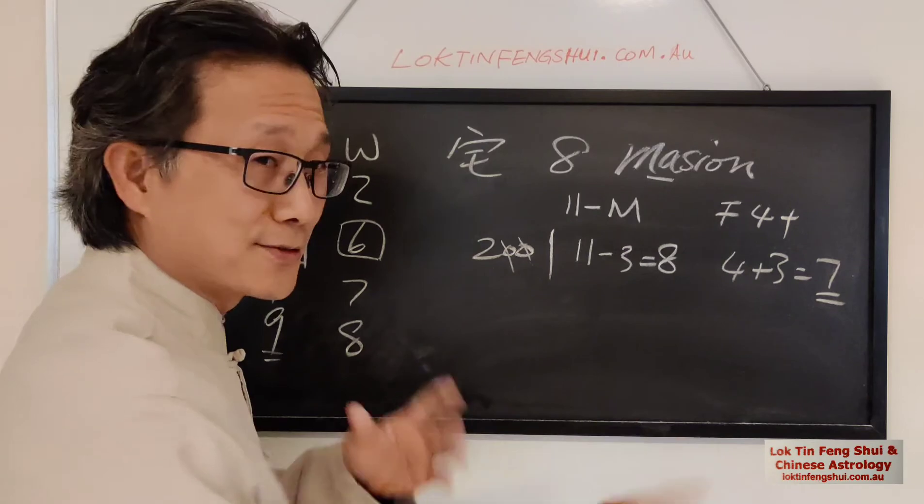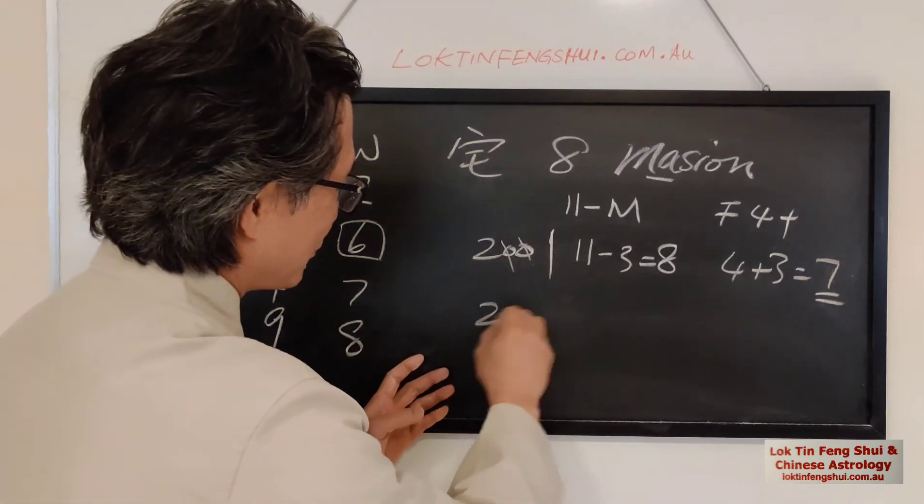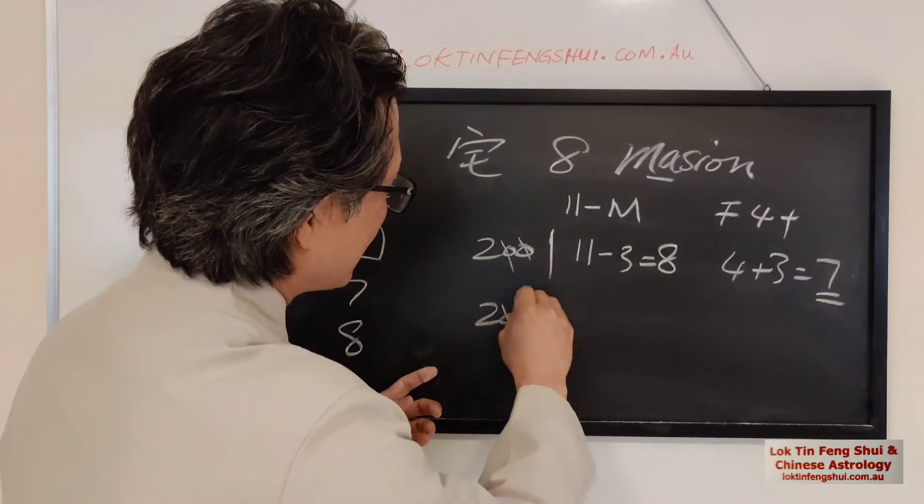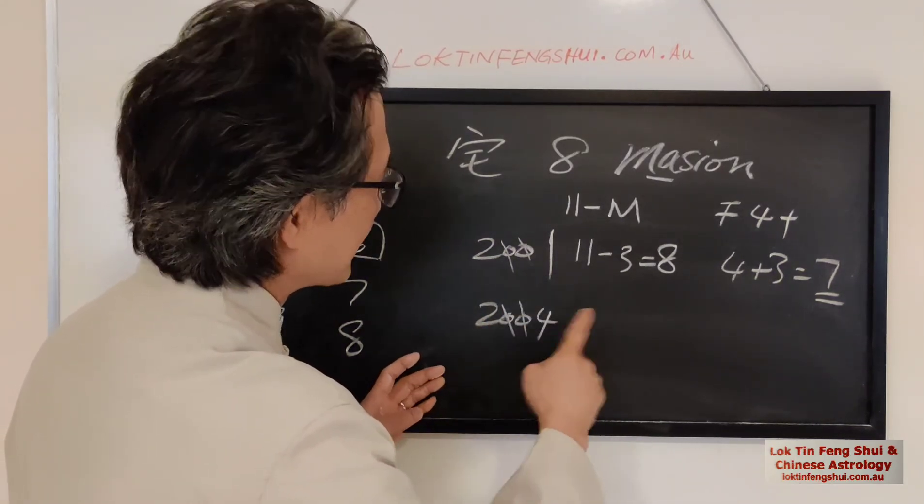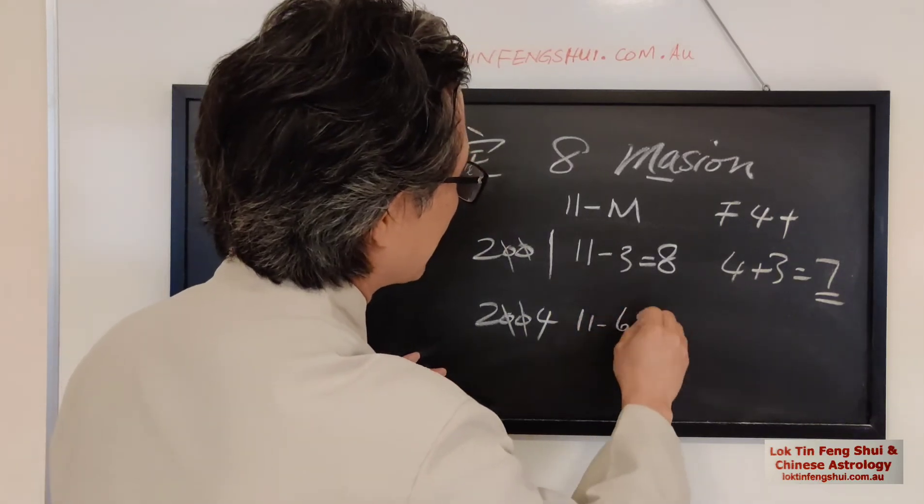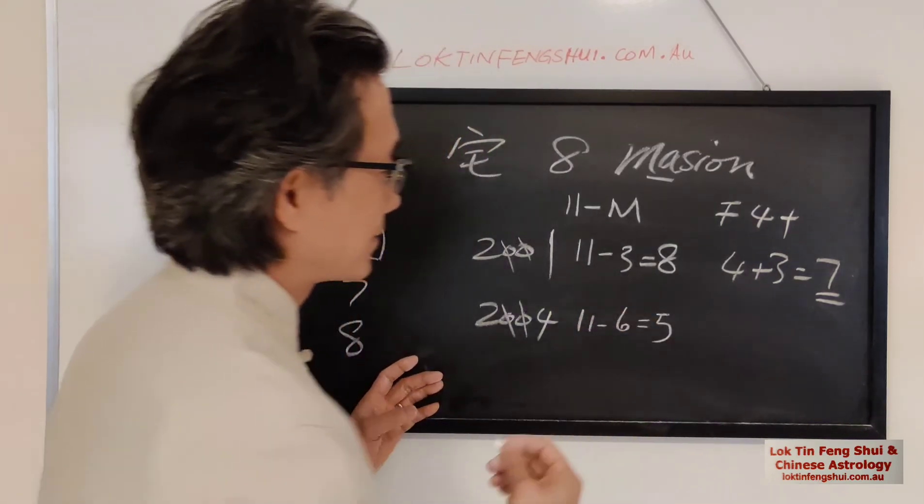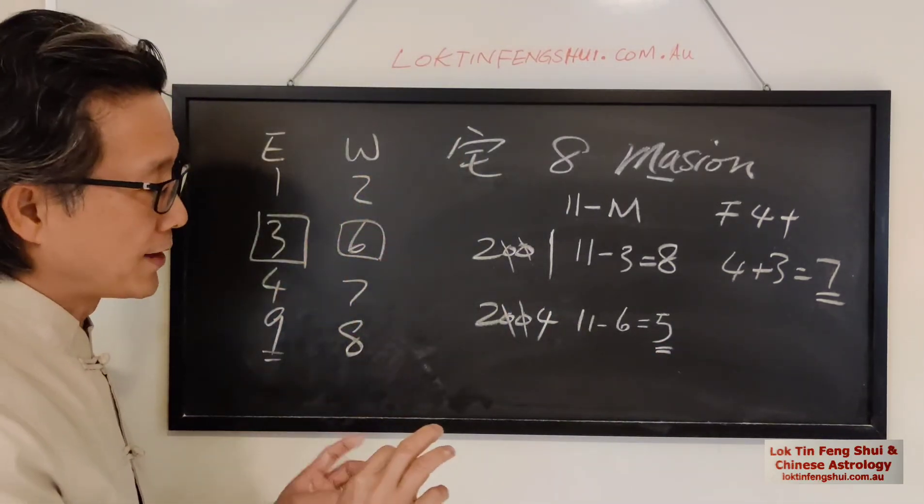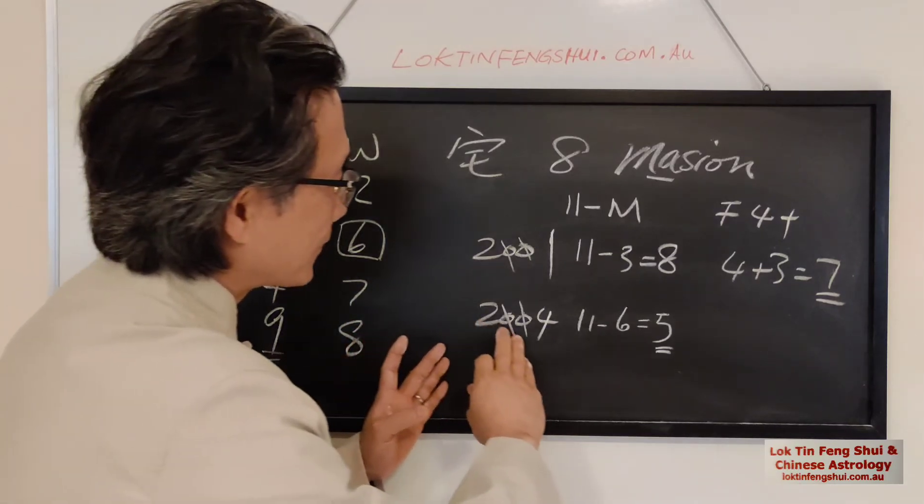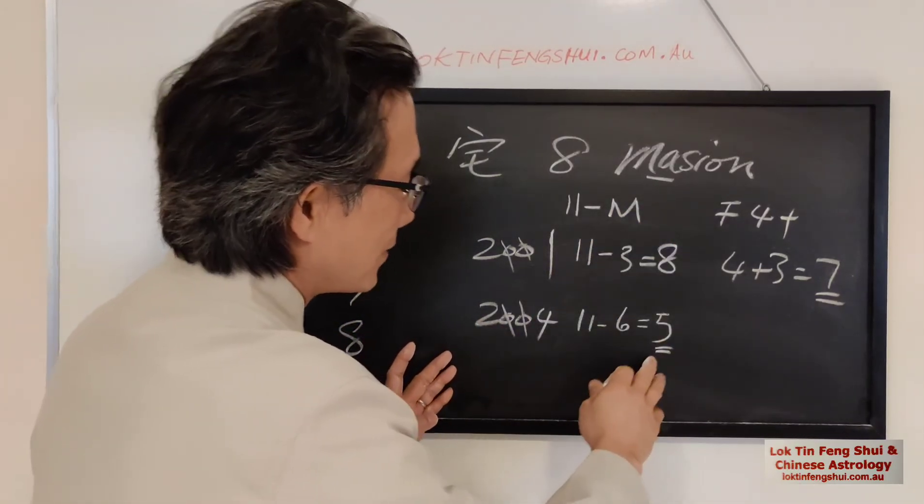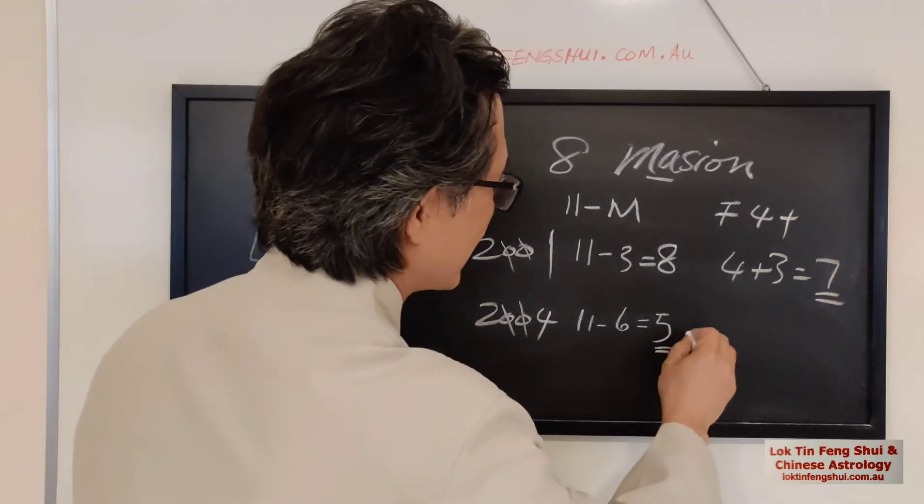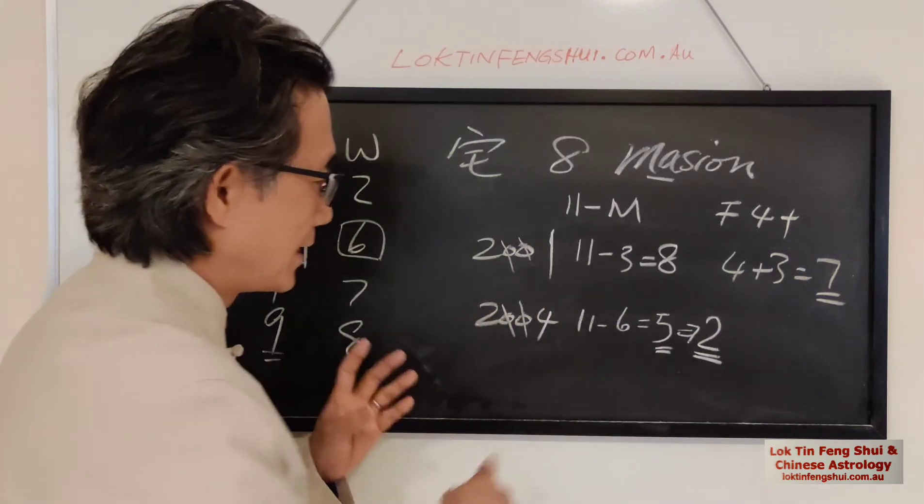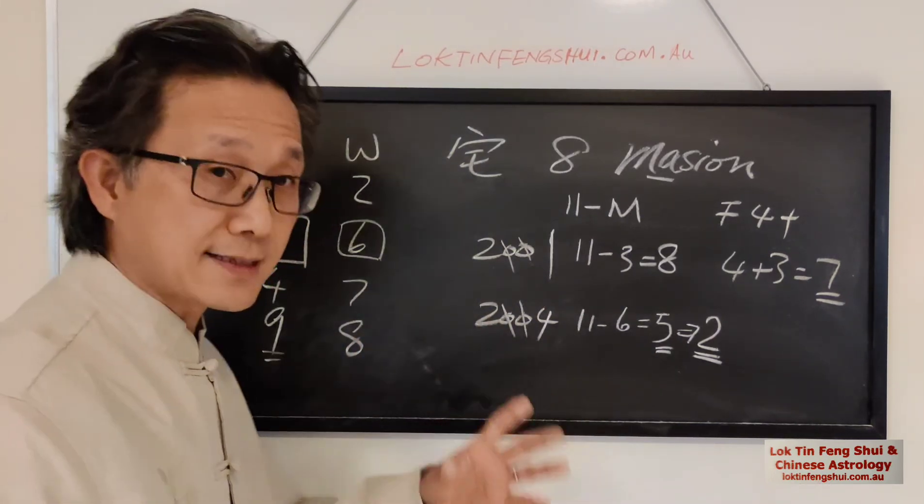Simple, right? So let's do another one. Let's say someone born in 2004. So cancel the zero. So become six, 11 minus six is become five. So five, actually. See, east group, west group, there's no five here. So for the male, the five, we assign a number two to it. So for the male, we assign a number two. If it's a female, we assign a number eight.